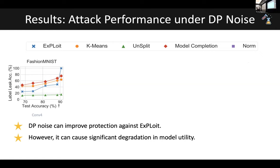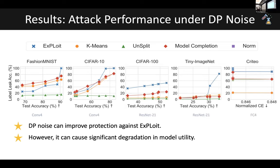We also perform evaluations in the presence of a defense. Differential privacy is a popular defense that people use to provide principled privacy guarantees against such attacks. We carry out evaluations in the presence of a DP defense by adding various amounts of gradient noise, creating a trade-off between utility and privacy. On the x-axis we have test accuracy, which measures utility; on the y-axis we have label leakage accuracy, which indirectly measures privacy. As expected, by increasing the amount of DP noise you can enable protection against attacks such as ours, but this often comes at a cost of significant degradation in model utility. The same trends hold for other datasets and model architectures.